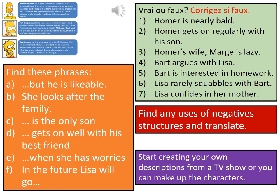We're going to continue with the family aspect and this time we're going to look at the Simpsons. The text is on slide 7 in the PowerPoint, or you can scroll back on the video. Start with the green box — write out the phrase and discuss whether it is true or false according to the text. Then look at the orange box and find those phrases: write out the English, then an equals sign, then the French. Next, find any use of a negative structure — for example, with 'ne...pas' in it — and translate them. Finally, think of your own TV show and write descriptions about those characters. Give yourselves ten minutes — good luck.